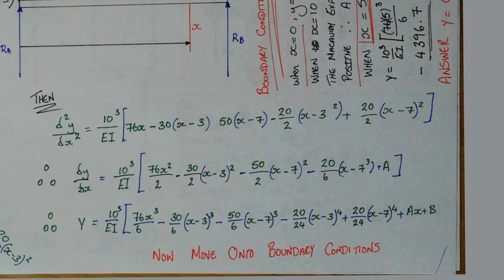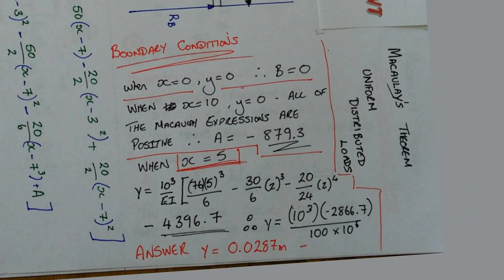And then once you have done this, you now move on to your boundary conditions. The boundary conditions are when X is equal to 0, Y is equal to 0, therefore B is equal to 0. If you looked back at the other video regarding simple supported beams, you will find that this is exactly the same.